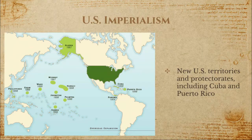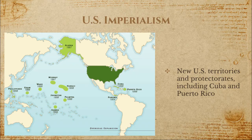Looking at this map, you can see the new territories gained by the United States during this time. These Pacific Islands offered raw materials that were not available in the U.S. and greatly expanded U.S. control in the Pacific Ocean.